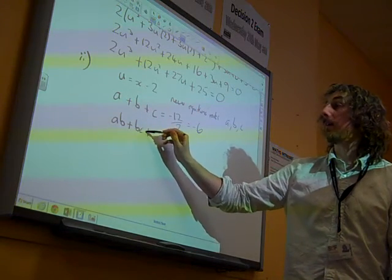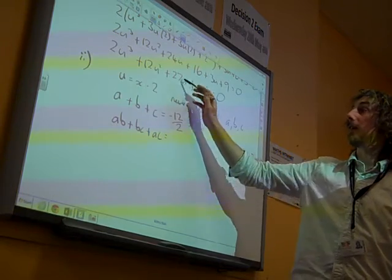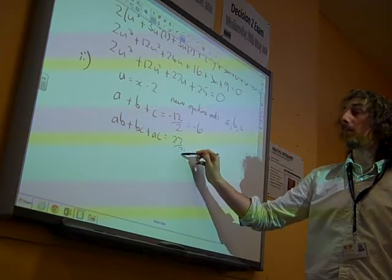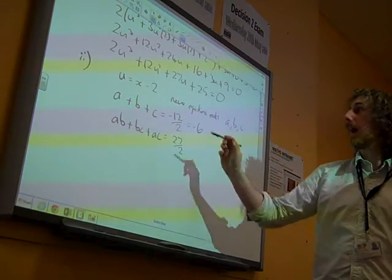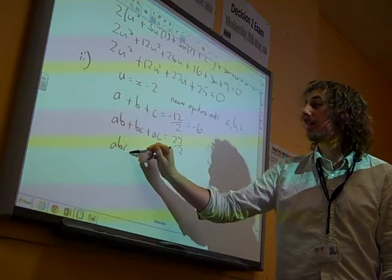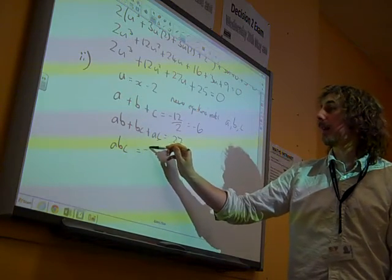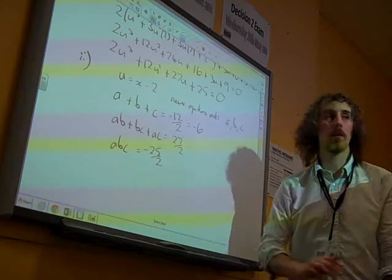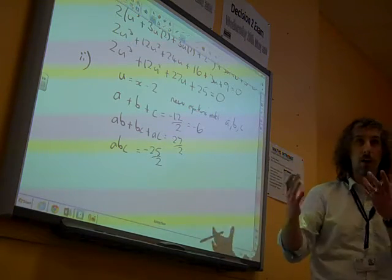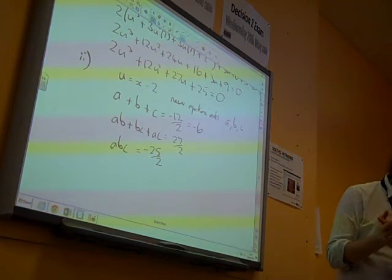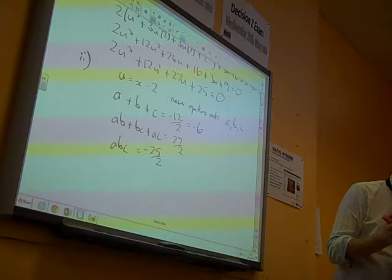The sum of the products, ab plus bc plus ac, is 27 over 2, and abc is minus 25 over 2. So that's doing our sum products, all of that stuff with the new roots.